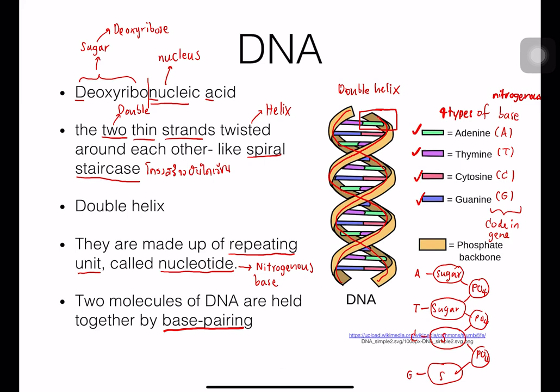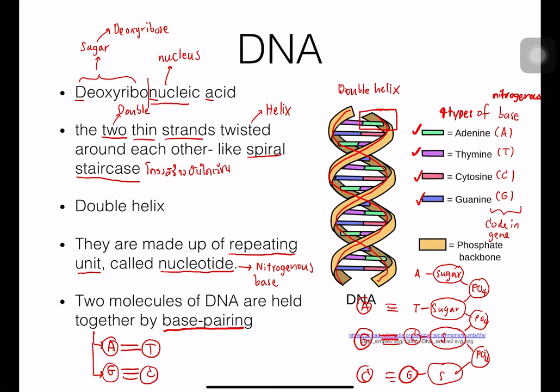Each base pair links to the other strand by base pairing. The rule of base pairing is: adenine (A) always pairs with thymine (T), and guanine (G) always pairs with cytosine (C).